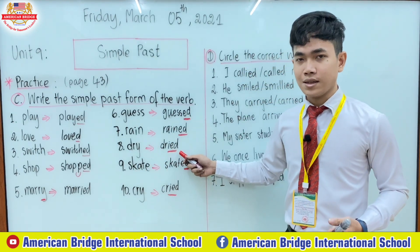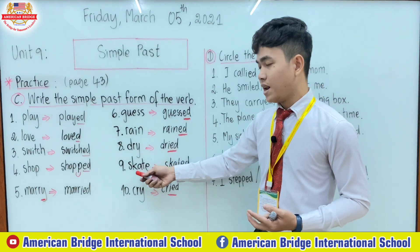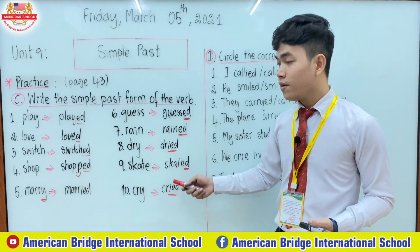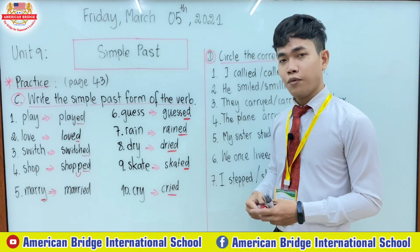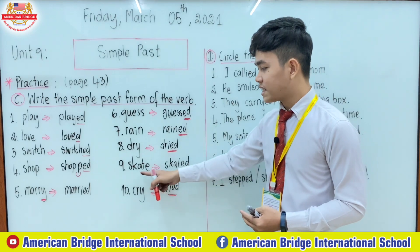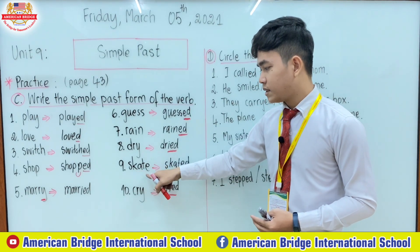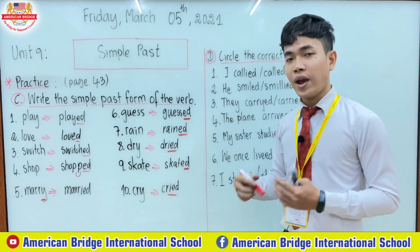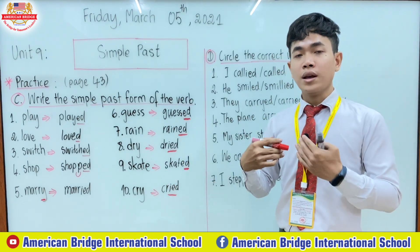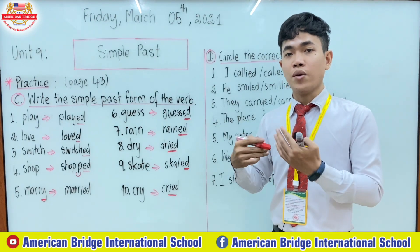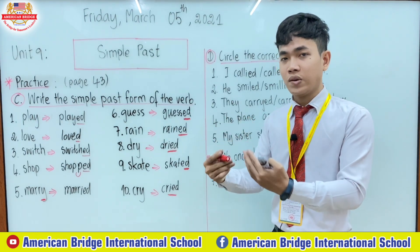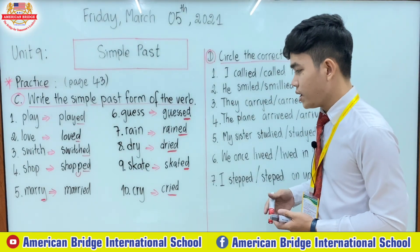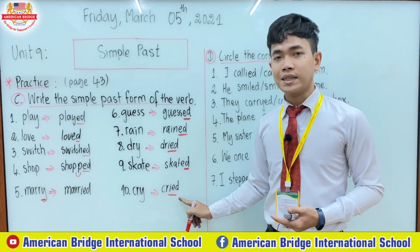Number eight: 'dried'. Number nine: how do you pronounce 'skated'? When you pronounce the word 'skate', it's spelled with the letter t. So when you add the vowel sound -ed, it goes like 'id': skated. Number ten: 'cried'.